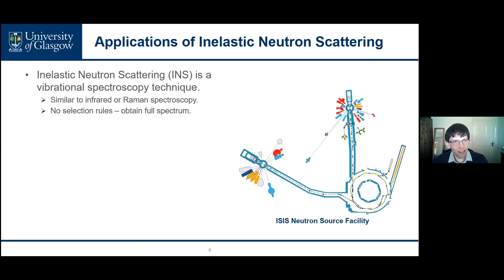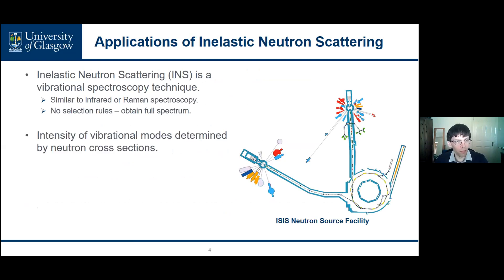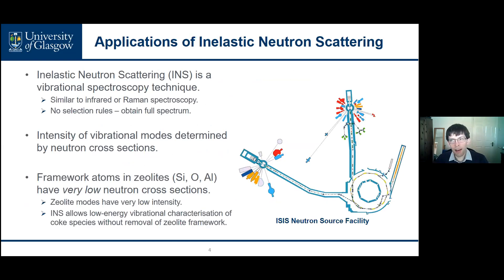Inelastic neutron scattering is a vibrational spectroscopy technique similar to infrared or Raman methods, except that it has no selection rules, so a single INS measurement obtains the full vibrational spectrum of the sample. The intensity of the vibrational modes is determined by the neutron cross-section of the atoms involved, and the framework atoms in zeolites have extremely low neutron cross-sections. This means zeolite modes have very low intensities, so the spectrum is dominated by the hydrocarbon portion of the coked catalyst sample. INS therefore allows low energy vibrational characterization of coked species in zeolites without needing to remove the zeolite framework and without framework modes interfering with observation.